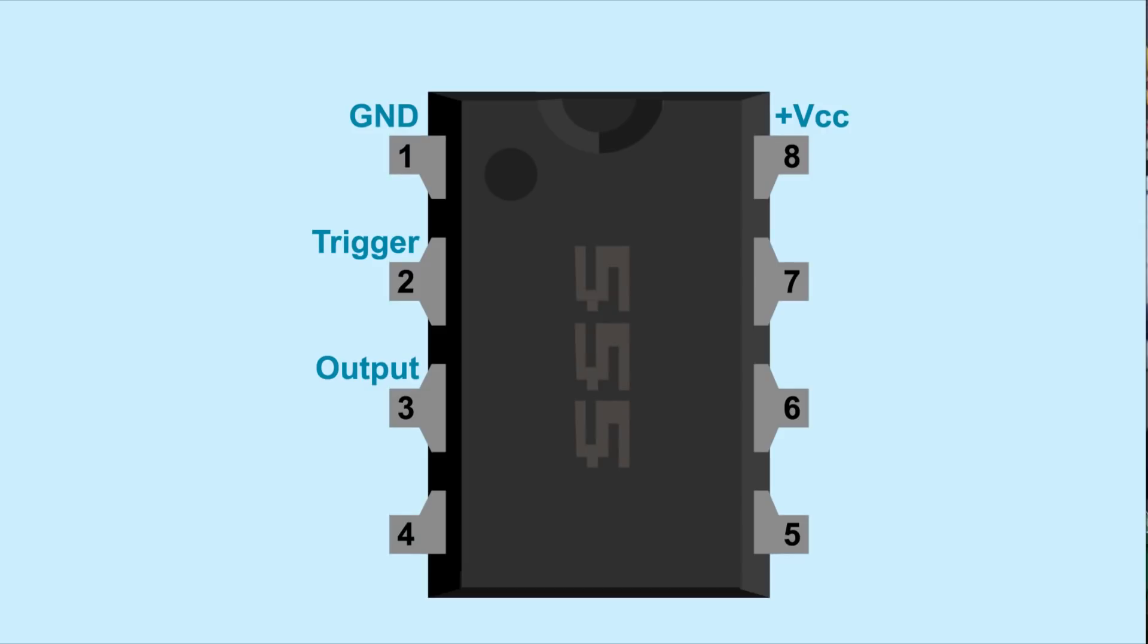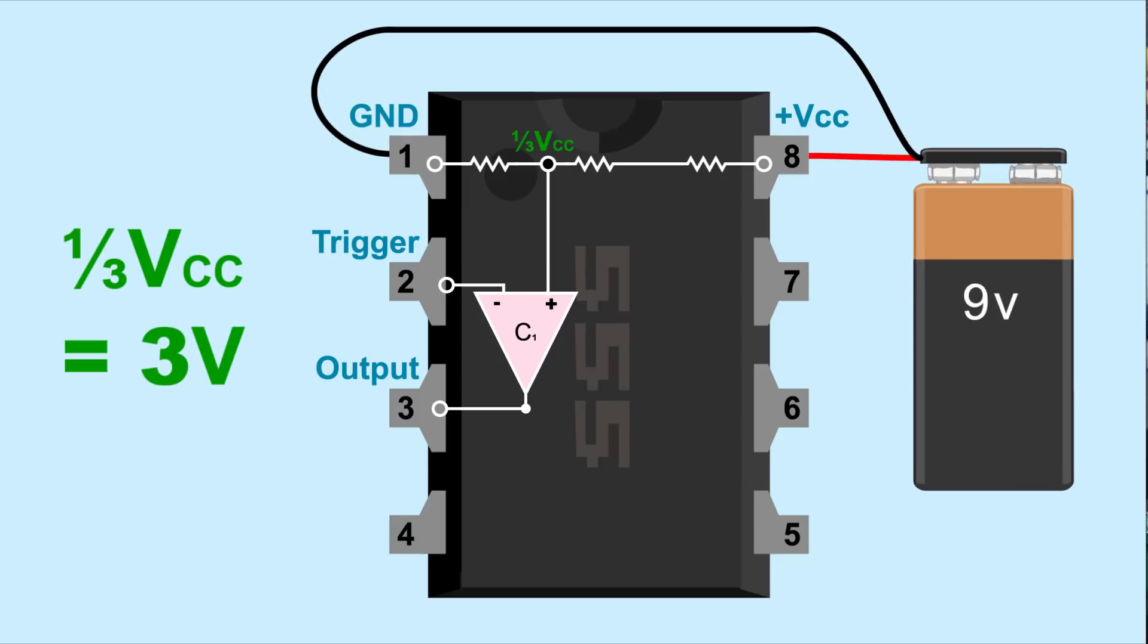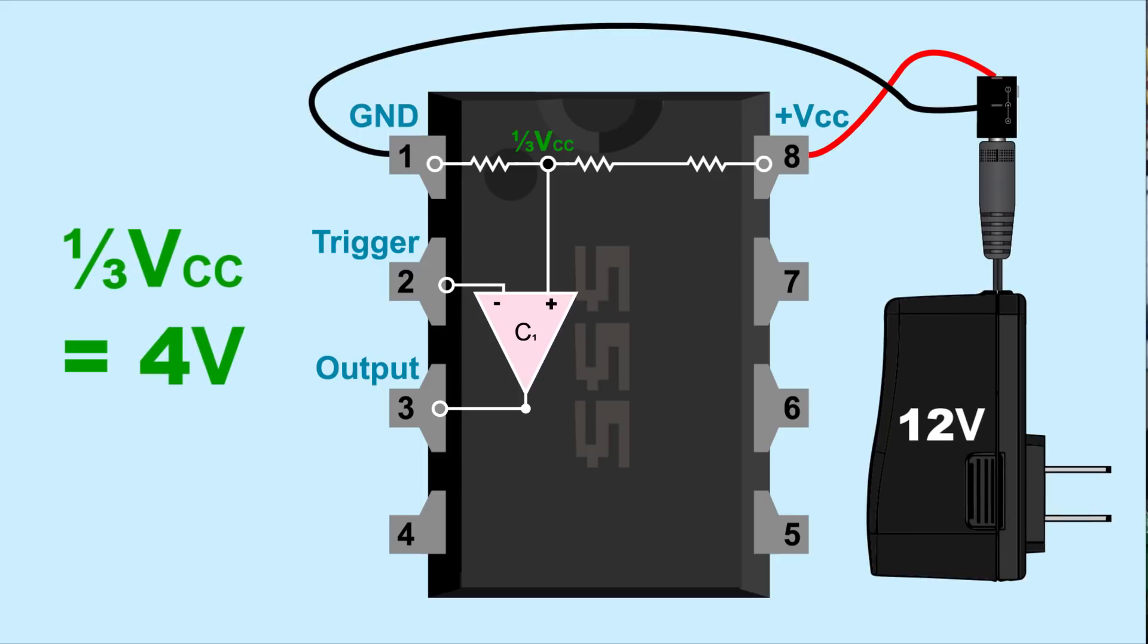Trigger, pin 2, is connected to the negative input of its comparator. We'll call this comparator 1. The other positive input of comparator 1 is connected to a voltage divider made up of resistors that connects the power and ground pins of the 555. From here, the positive input of comparator 1 is supplied one-third of the supply voltage, one-third Vcc. So if the supply voltage is 9 volts, the positive input gets 3 volts. Or if the supply voltage is 12 volts, the positive input would get 4 volts.